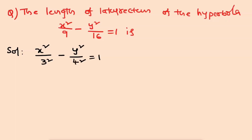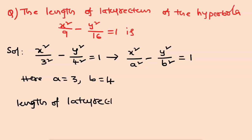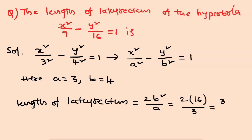In the standard form of the hyperbola x squared by a squared minus y squared by b squared equal to 1, comparing gives a equals 3 and b equals 4. The positive axis is the x-axis. The length of the latus rectum is 2b squared by a, giving 2 times 16 by 3 equals 32 by 3. So the answer is 32 by 3.